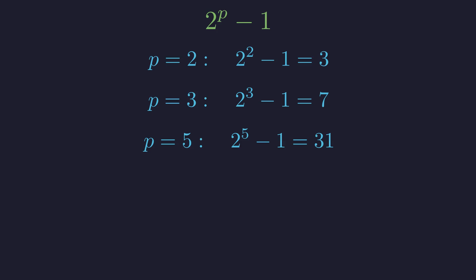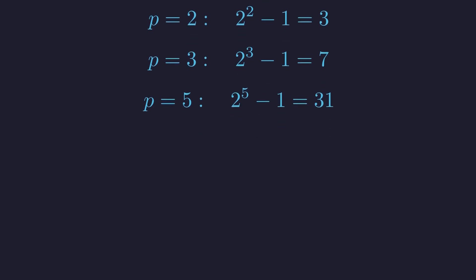If p equals 5, we get 2 to the 5th minus 1 equals 31, prime again. But here's the catch. Not every prime exponent produces a prime result.